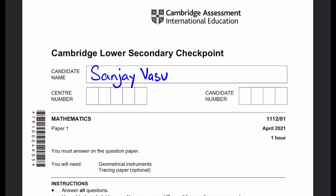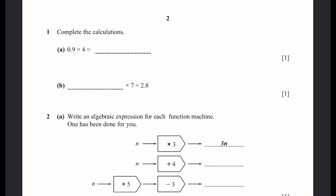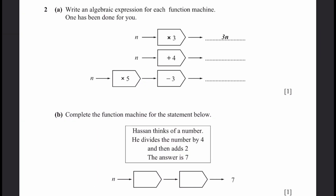Let's start. Complete the calculations. A: 0.9 multiplied by 4 is equal to 3.6. Dash multiplied by 7 is 2.8 — that's 0.4 multiplied by 7, which gives 2.